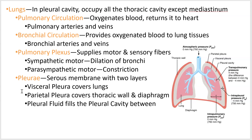Lungs also have pleurae, which are membranes. Similar to the heart's pericardium, the lungs are pushed into a balloon-like structure. The layer on the outside of the lungs is called the visceral pleura or visceral serosa. The layer on the inside of the ribs is called the parietal pleura, and the space between is called the pleural cavity, filled with pleural fluid. Those numbers will make more sense on the next slide, but that's enough for this screencast.